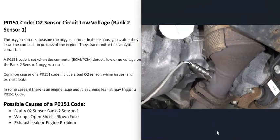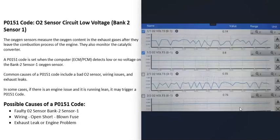The first possible cause is that the bank 2 sensor 1 O2 sensor has just gone bad and needs to be replaced. You can test these sensors using a good OBD2 scan tool by going into live data or data stream and selecting the O2 sensors — for example, bank 1 sensor 1, sensor 2, bank 2 sensor 1, and bank 2 sensor 2.